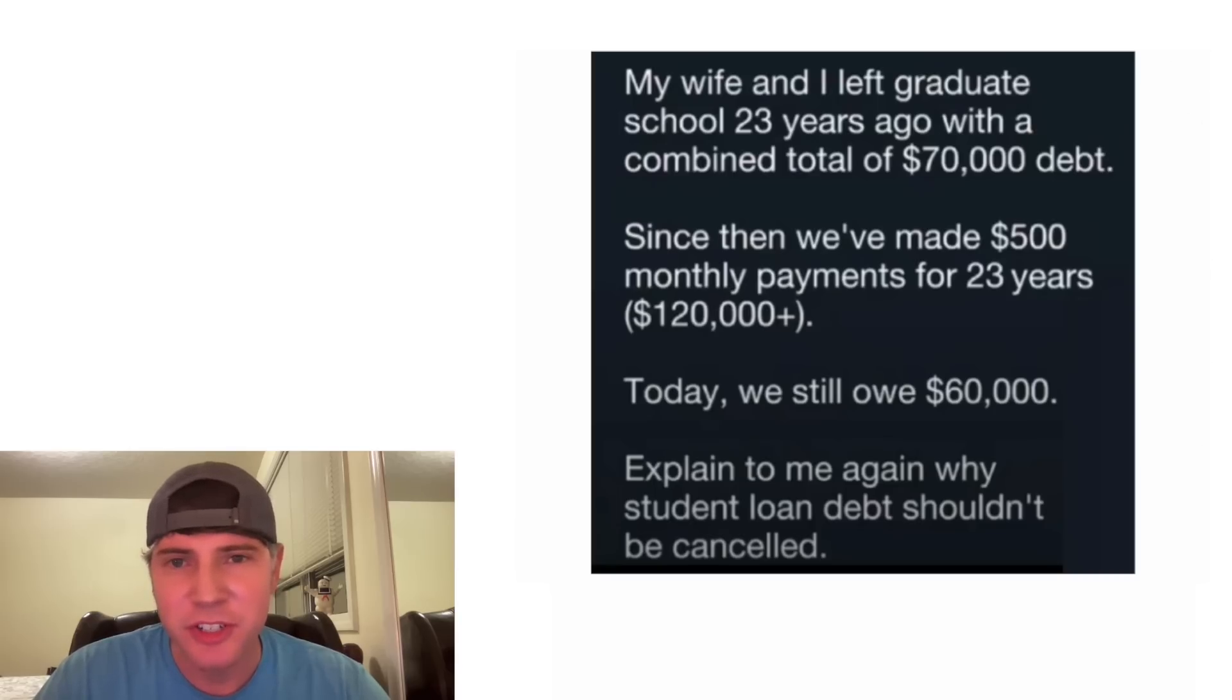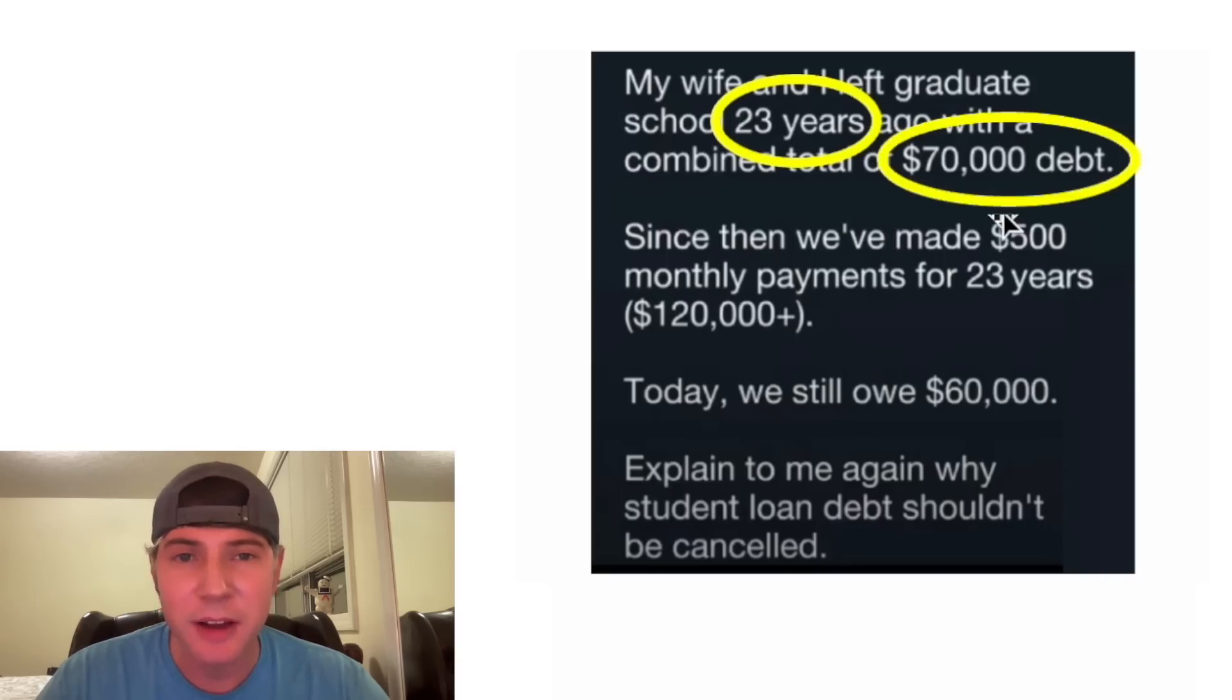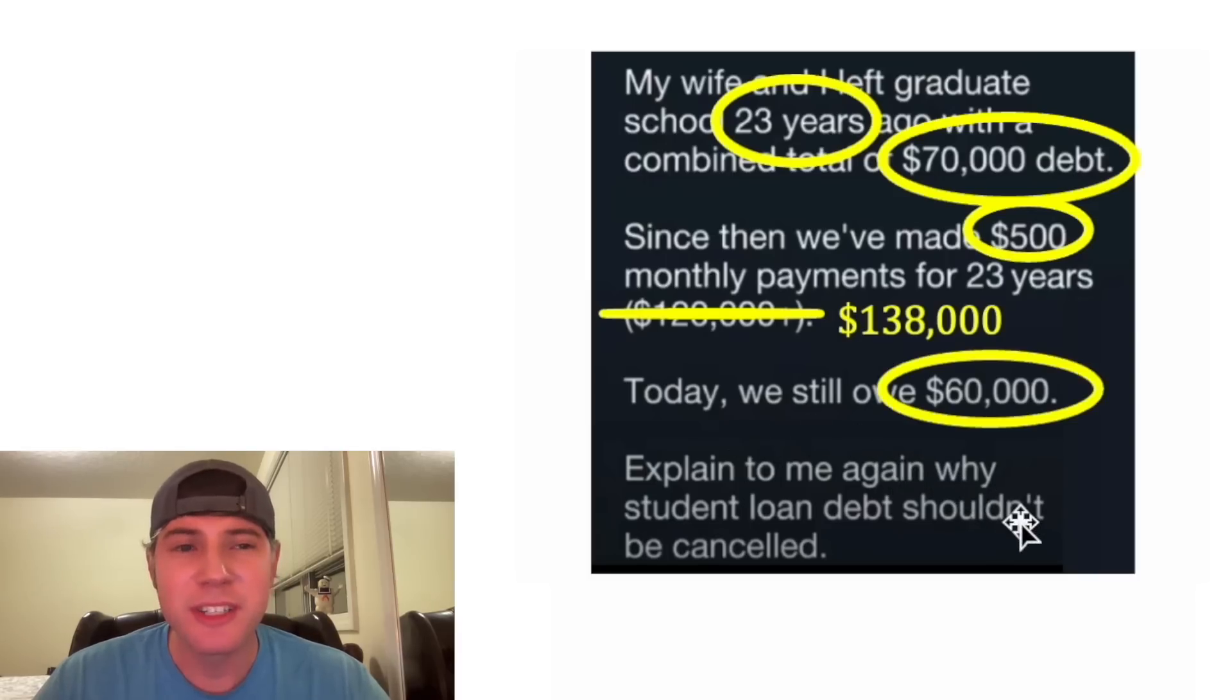Hey guys, I saw this post and I thought it was interesting. It says my wife and I left graduate school 23 years ago with a combined total of $70,000 in debt. Since then, we've made $500 monthly payments for 23 years, and they say here $120,000 plus. And it's quite a bit more than that. This would end up being $138,000. Today, we still owe $60,000.